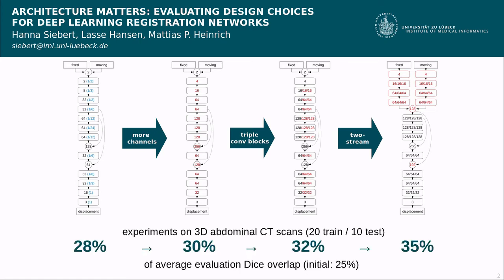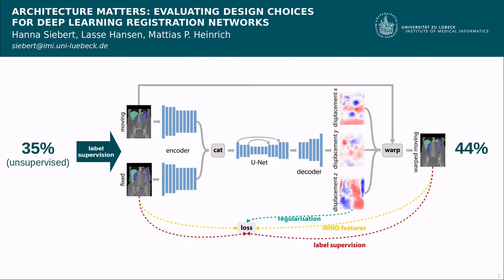All of the modifications led to an improvement of dice overlap when performing experiments on abdominal CT scans. For our proposed two-stream architecture, we furthermore added label supervision, which led to a further gain of registration performance.